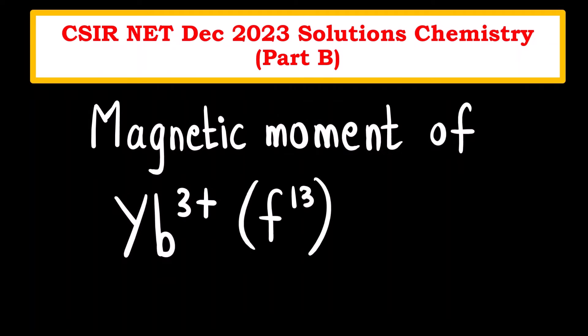Hello everyone, welcome to Chemizon Complete Chemistry. In this video we are going to solve a question asked in the December 2023 NET exam Part B. The question is to find the magnetic moment of ytterbium Yb³⁺, which has an f¹³ outermost electronic configuration.